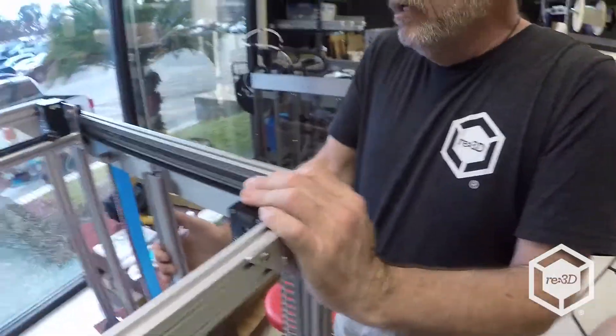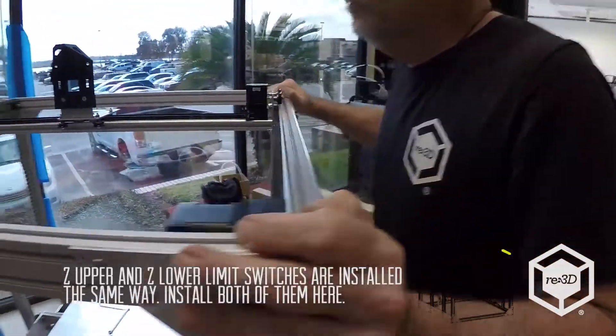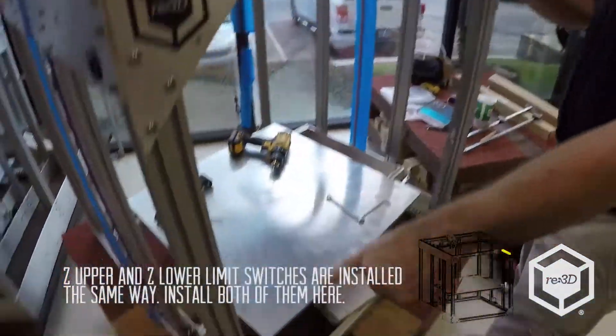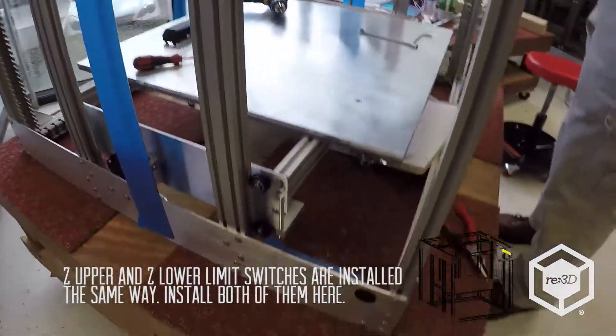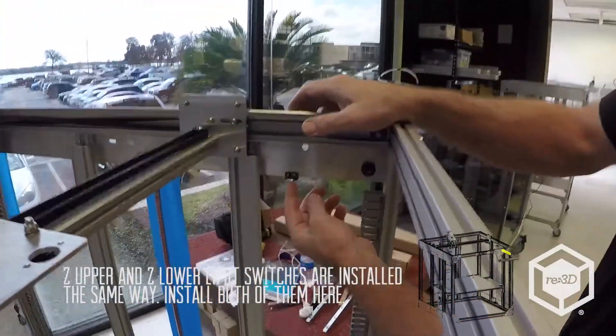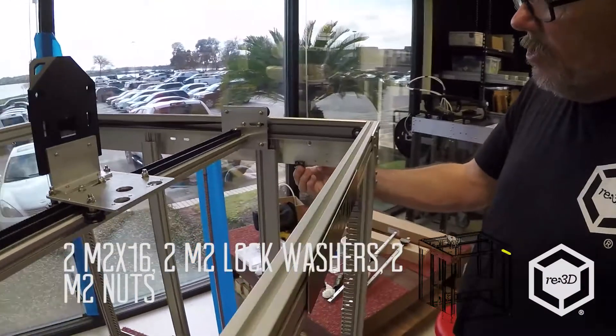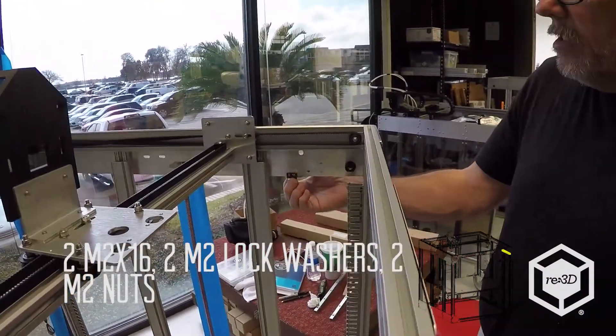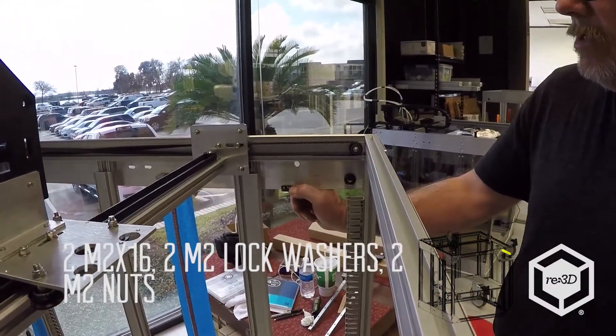Now we're going to do the back limit switch. I'm going to do the Z bottom lower limit switch. I've got the Z upper already installed. You want the hinge to go towards the front of the bot. So it's going to be an M2x16 with a lock washer and a regular nut.